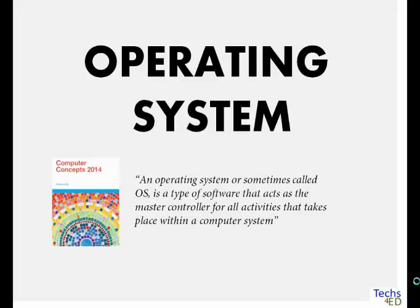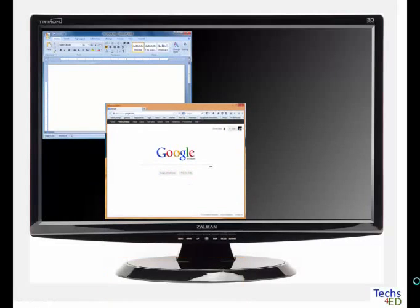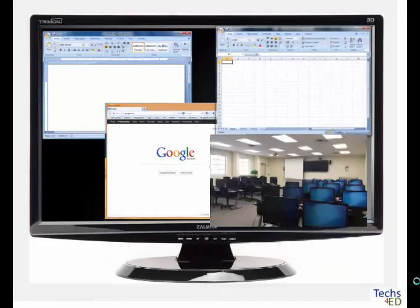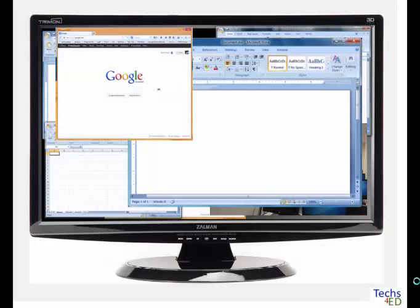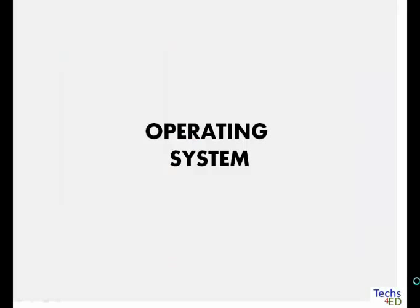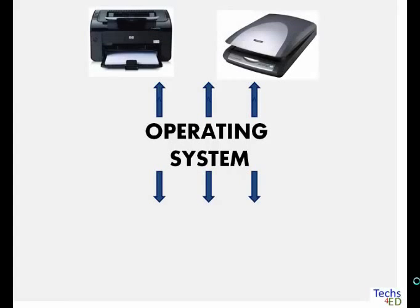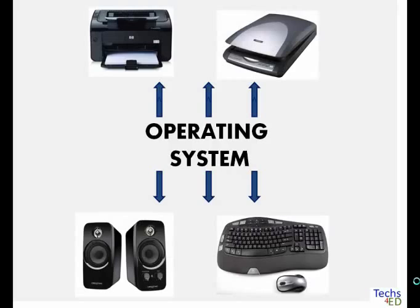So let's talk about this for a minute. What does it mean? It means it provides the environment for software like Word Document, for surfing the net, using Excel, viewing photos, and everything else you do in the computer. The operating system also communicates with everything else attached to it, such as the printer, scanner, speaker, keyboard, and mouse.